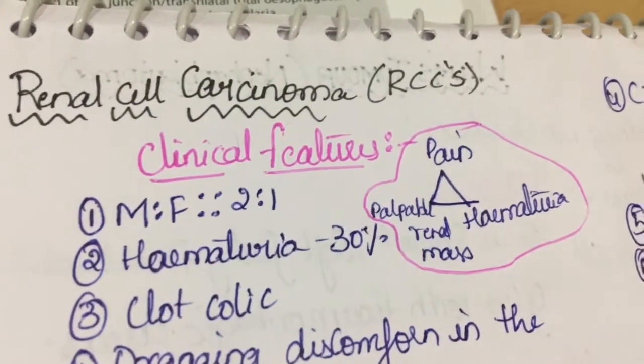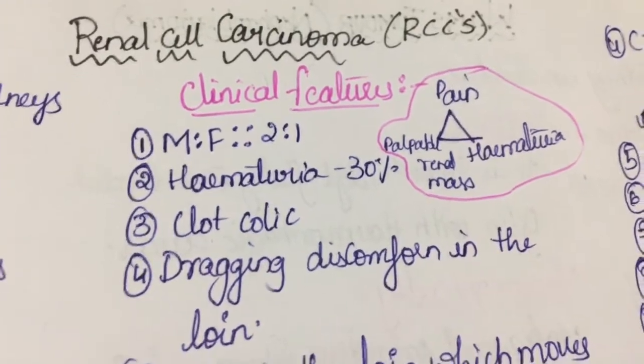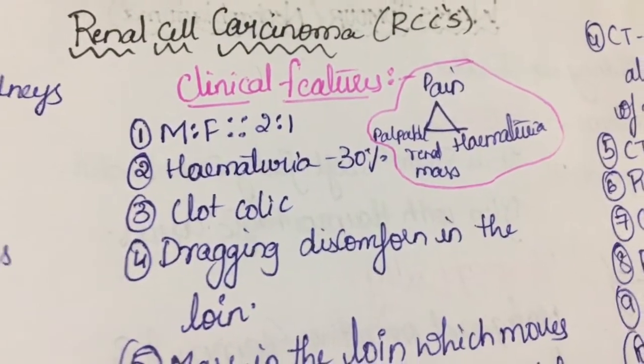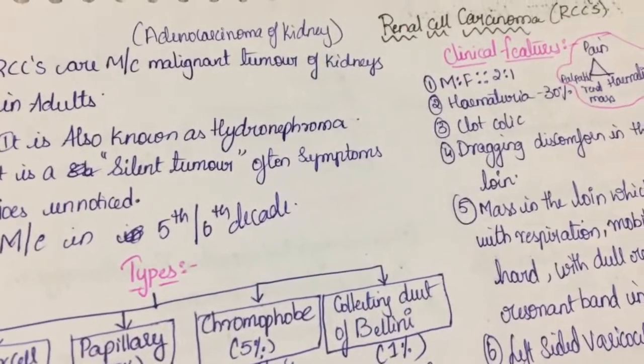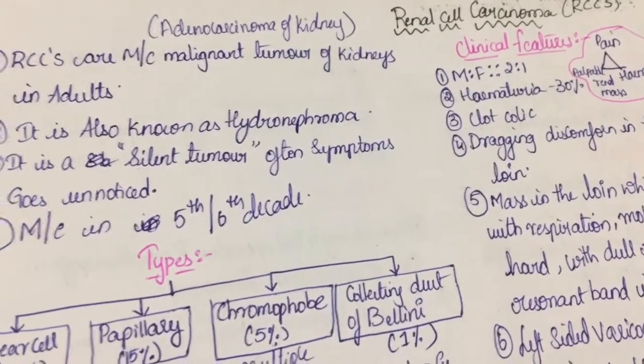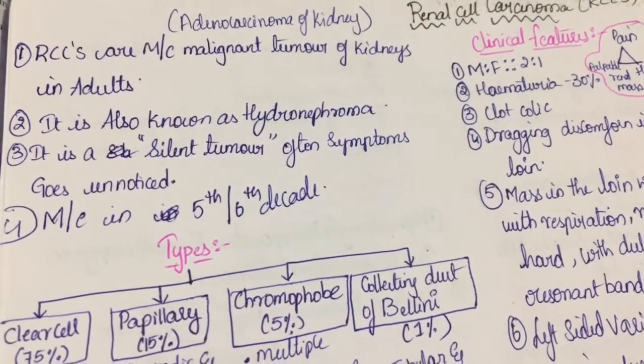Renal cell carcinoma. Now, we will see what to be written if the question is renal cell carcinoma in final MBS surgery exam. Renal cell carcinoma. They are adenocarcinoma of the kidney. Renal cell carcinoma are most common malignant tumour of the kidney in adult.